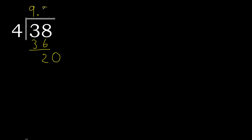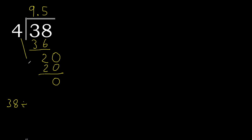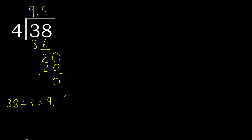4 multiplied by 5 is 20. 20 minus 20 is 0. Therefore finish. 38 divided by 4 is 9.5. Finish.